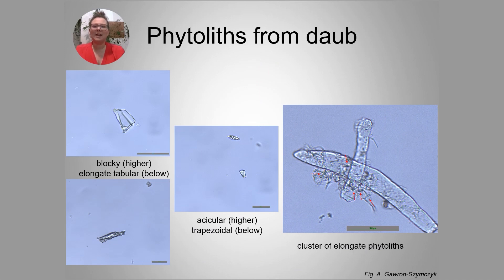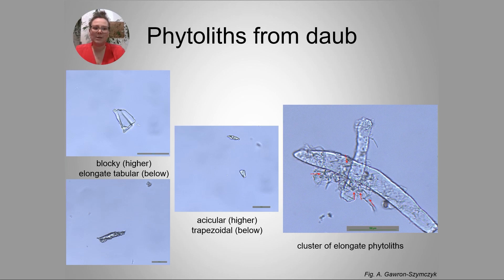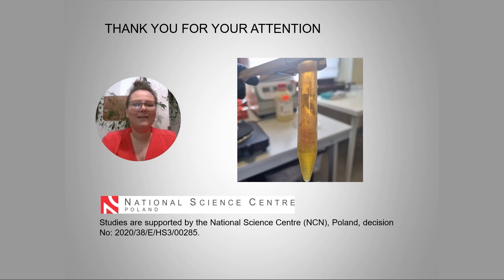Phytoliths of various shapes and sizes are visible microscopically. In the first, second, and third pictures, we can observe probably grass silica short-cell phytoliths. In the fourth picture, we can see long-cell phytoliths, probably of epidermal projection. Currently, it is difficult to assign them to specific species because we do not have a comparative database yet. However, based on the study of grass phytoliths from the Falkland Islands, it is certain that the distinction of species is possible, even when it is impossible to distinguish species based on pollen. Work is underway on a comparative collection.